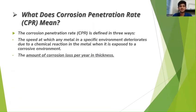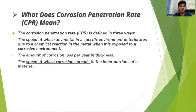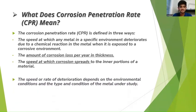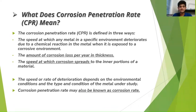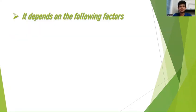Second one: the amount of corrosion lost per year in thickness. Third one: the speed at which corrosion spreads to the inner portions of a material — that is, the portions which are below the outer layer of the metal which is exposed to oxygen. The speed or rate of deterioration depends on the environmental conditions and the type and condition of the metal under study. Corrosion penetration rate is also known as corrosion rate.